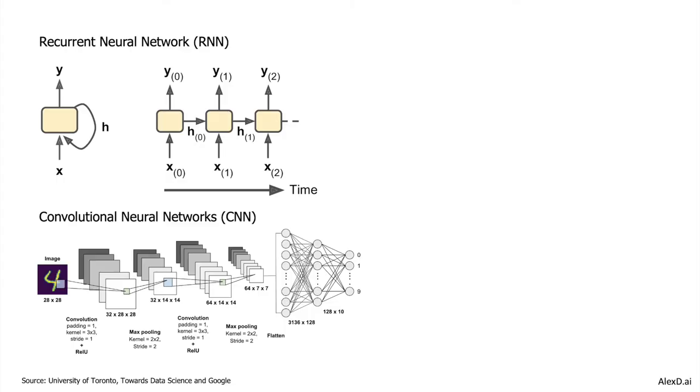If we have pictures, maybe the best architecture is a convolutional neural network, because it tries to emulate the same way that we, in our brains, see and understand the features in a picture or a movie — maybe first lines, arrows, and things like that.